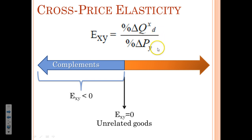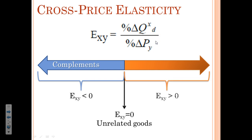If, on the other hand, the price of one goes up and the quantity demanded for the other good goes up — so that both the numerator and denominator are going in the same direction — then we know that the cross price elasticity will be positive. When it's positive or greater than zero, we're talking about substitutes. So if the price of Pepsi goes up, then I will substitute Coke for Pepsi. The quantity demanded for Coke will increase, and because both numbers are positive, our cross price elasticity number is positive, and we're talking about substitutes.